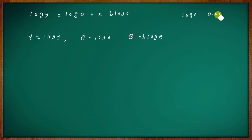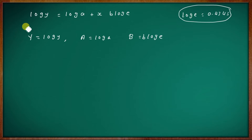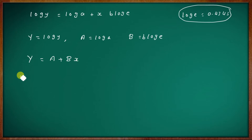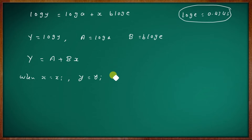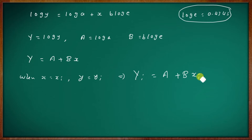The value of log e is 0.4343. We substitute: let capital Y equal to log y, capital A equal to log a, and capital B equal to b·log e. Then we have the linear form: capital Y equals A plus B·xi.